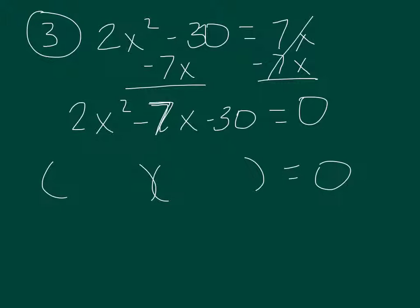Keep it equal to 0, so 2x to the second. So you have 2x and x. A times c is negative 60. So we've got to figure out what's going to multiply to 60 and add to 7. So you have 1 and 60, 2 and 30, 3 and 20, 4 and 15, 5 and 12. There you go, so it's going to be 5 minus 12.